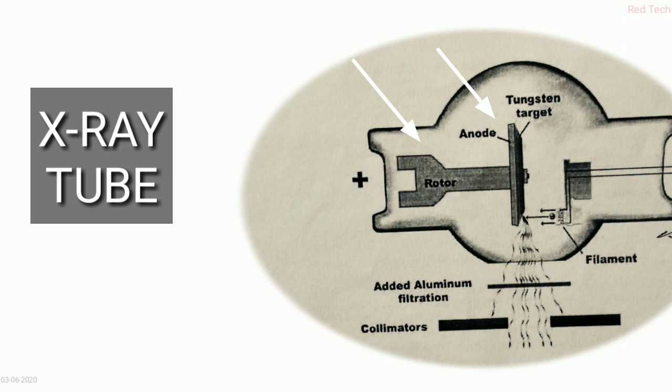type mein hota hai - ya to hamara stationary hoga ya phir hamara rotator hoga. Agar rotator hota hai to iski jo effective area hai woh hamara zyada ho jata hai as compared to stationary ke. Ab jo hamara stationary anode hota hai, is mein agar lagatar koi area pe bar bar electron hit karenge to is mein iski degeneration hogi ya iski life kam hogi. But as compared to rotating anode mein woh rotate karta hai isliye is mein jo life span hoti hai uski bhi zyada hoti hai.